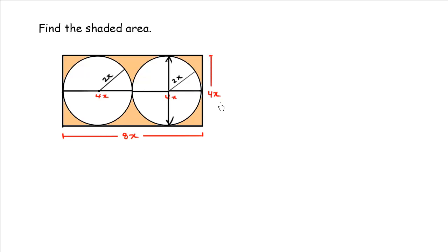So what we can say is the area of the shaded region is equal to the area of the rectangle, the large rectangle, minus two times the area of a circle. There's two circles.